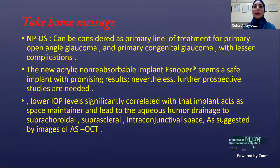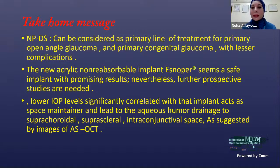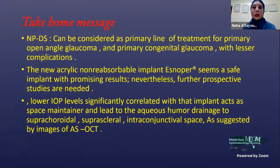On anterior segment OCT, we can show the HEMA implant, the intrascleral and supra-choroidal space, and on UBM the intrascleral bleb and subconjunctival bleb with uveal scleral outflow. Non-penetrating deep sclerectomy can be considered as the primary line of treatment for primary open-angle glaucoma, and sometimes replaces medical treatment. The new acrylic non-reabsorbable implant shows promising results; however, further prospective studies are needed. Lower IOP levels are significantly correlated with this implant as a space maintainer, leading to aqueous drainage to supra-choroidal, supra-scleral, and intraconjunctival space.